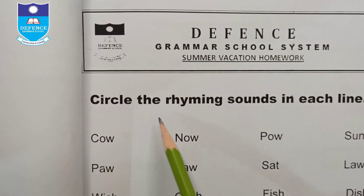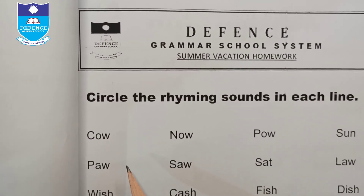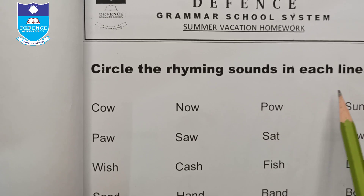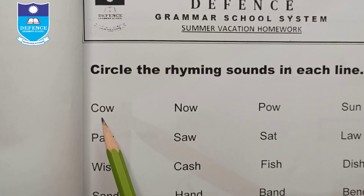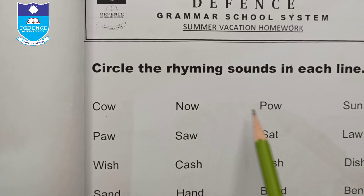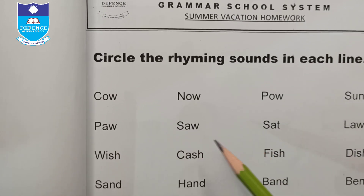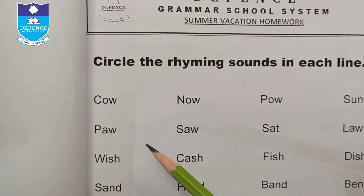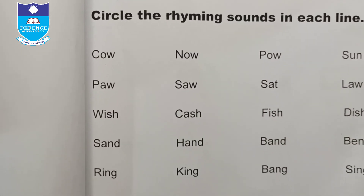Next, circle the rhyming sounds in each line. Circle the rhyming words — for example, 'cow', and the rhyming words are 'now' and 'pao'. Similarly, circle the rhyming words for 'pa', 'wish', 'sand', and 'ring'.